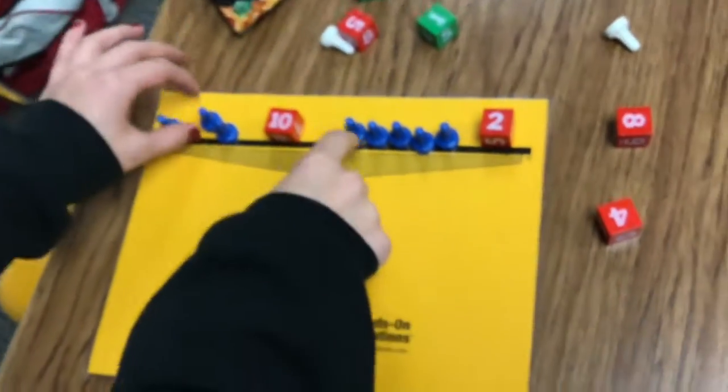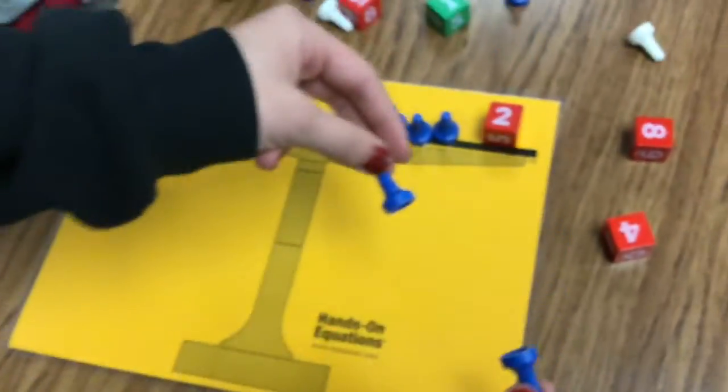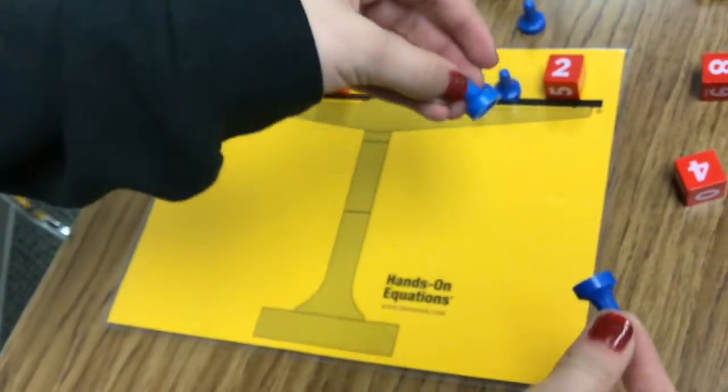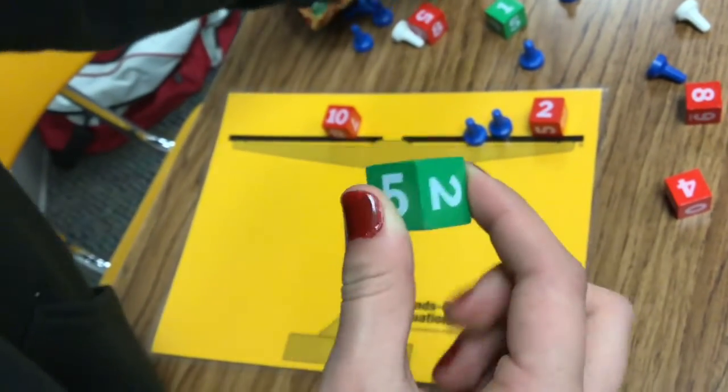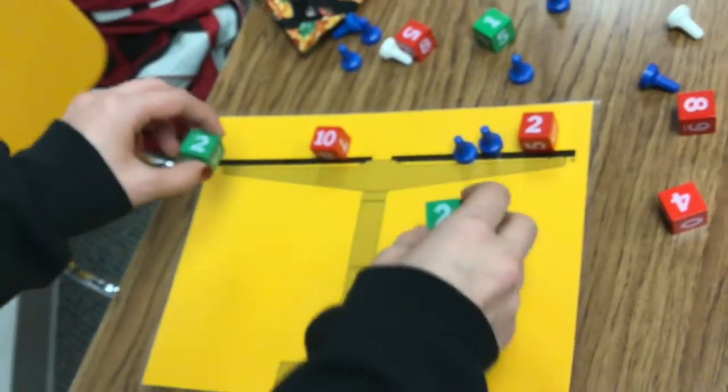So first, we're going to start off by taking off these two blue pawns with both of our hands. Then we're going to try to get rid of this too. So we're going to take this green cube, which is the opposite. And we have to add it to both sides, otherwise it wouldn't be legal.